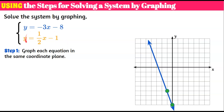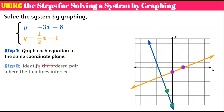Now let's graph the orange linear equation, y equals one half x subtract 1. The y-intercept is negative 1, so I plot a point there. My slope is one half, so I rise 1 and run 2, plot my second point, and draw the line. There's our system. Step two: identify the ordered pair where the two lines intersect — that's negative 2, negative 2.